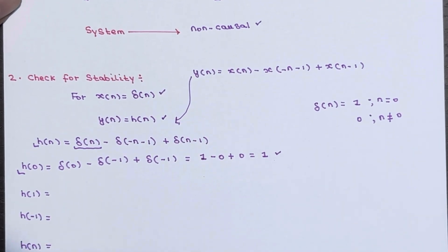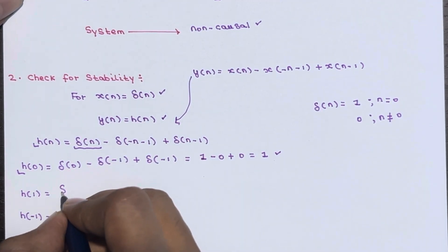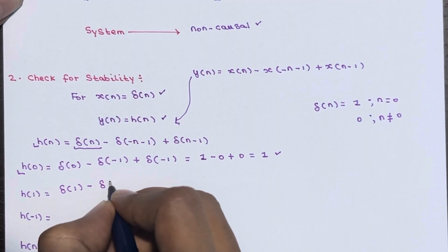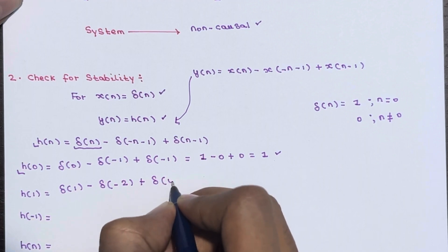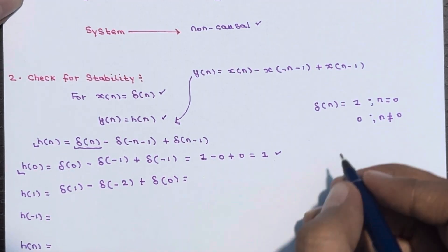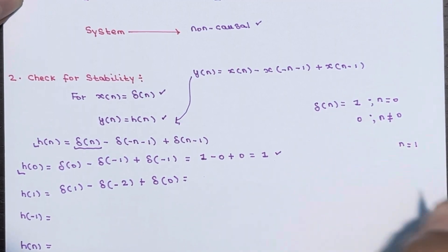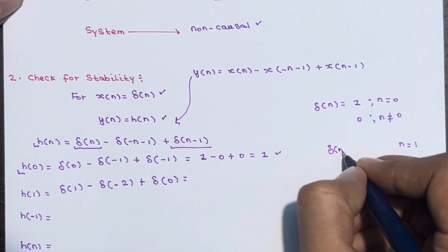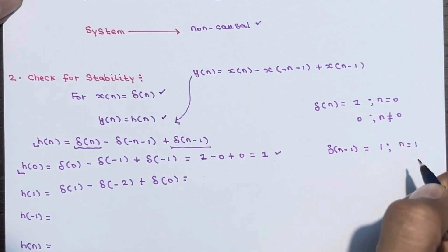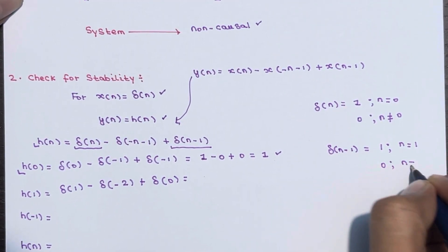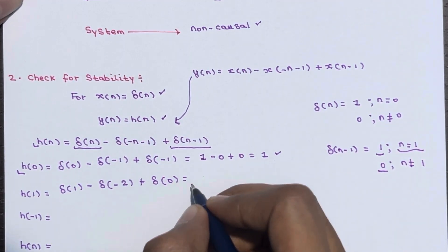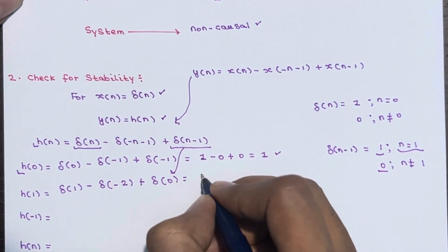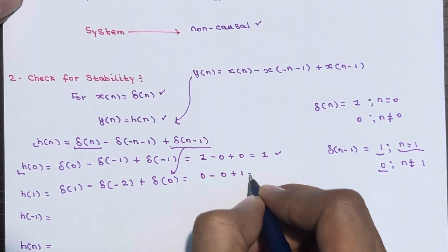Now let's calculate h(1). Substituting n = 1: δ(1) - δ(-2) + δ(0). The term δ(n-1) gives 1 when n = 1 and 0 otherwise. So at n = 1, that term gives 1, and the result is 0 - 0 + 1 = 1.